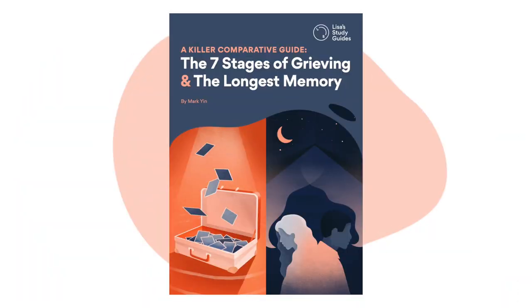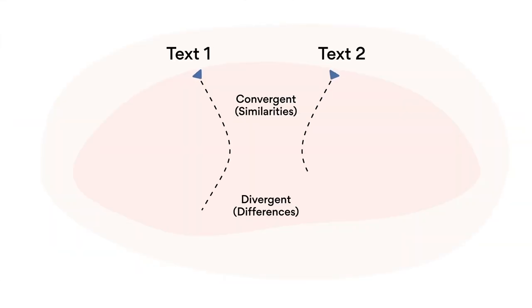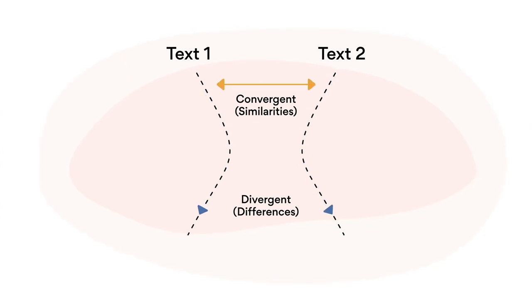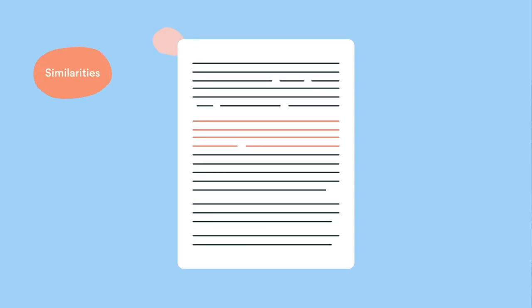Hi, my name's Mark. I did my VCE in 2016, and since then I've been writing study guides with LSG. I wrote this study guide on The Seven Stages of Grieving and The Longest Memory. We'll be applying the convergent and divergent strategy from LSG's How to Write a Killer Comparative and looking at how ideas are developed in similar or different thematic directions in these texts.